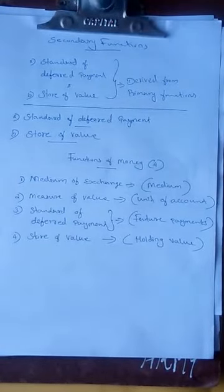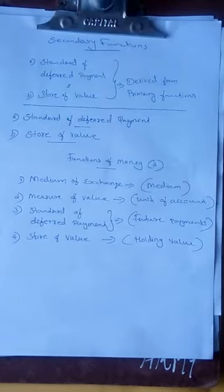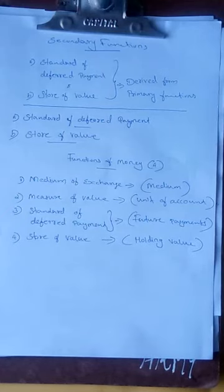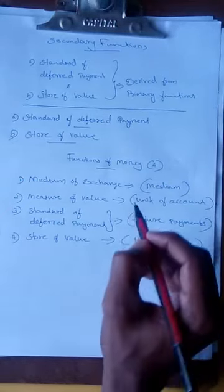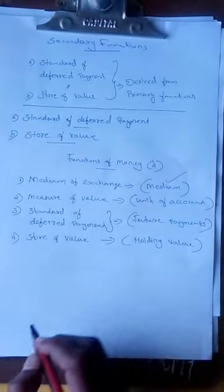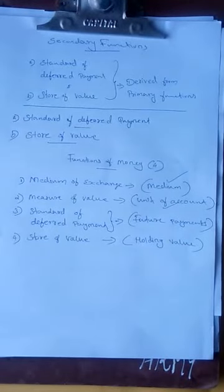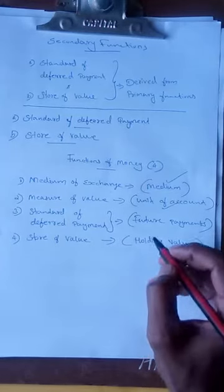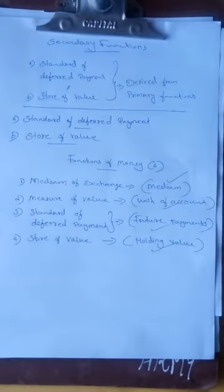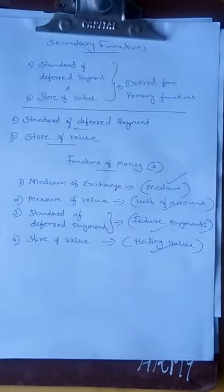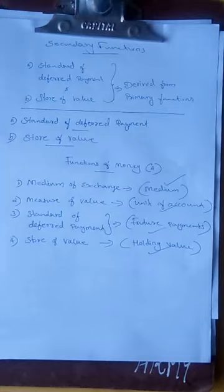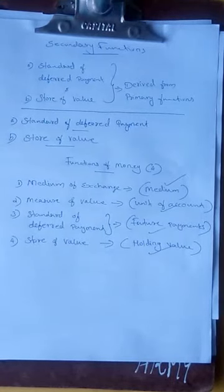Now we can make a conclusion about the functions of money. There are four functions of money: first, medium of exchange, which means money as a medium; second, measure of value, which means it serves as a unit of account; third, standard of deferred payment, which serves as a future payment; and fourth, store of value, which means holding value. Instead of keeping things, we can keep money that is more convenient to all. That's all about functions of money. Thank you.